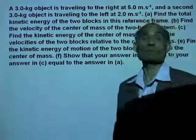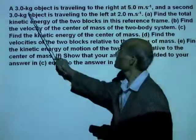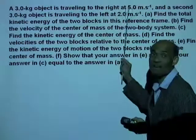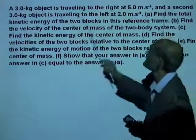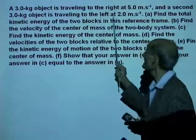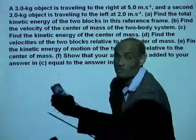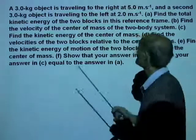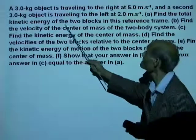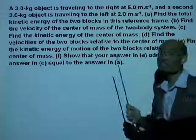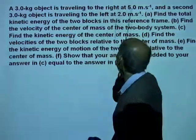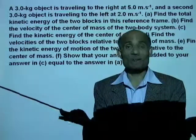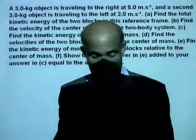Let's do a problem to consolidate what we discussed. A 3-kilogram object is traveling to the right at 5 meters per second - traveling to the right, so the velocity is positive. A second 3-kilogram object is traveling to the left at 2 meters per second - traveling to the left, so the velocity is negative. Always identify the direction and associate the sign positive or negative. Part A: find the total kinetic energy of the two blocks. In what reference frame are these velocities measured? These velocities are measured in the lab reference frame where I am standing.